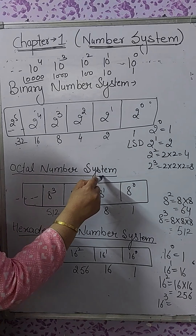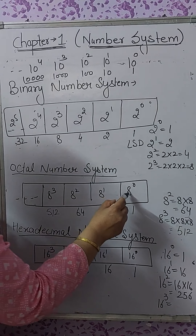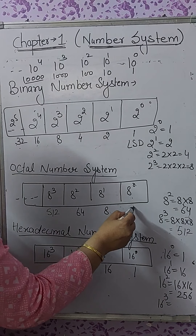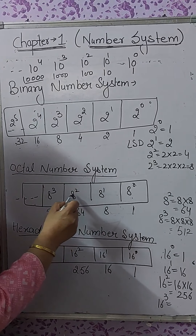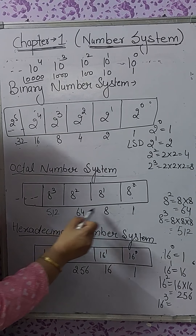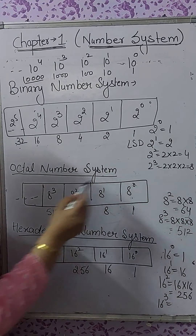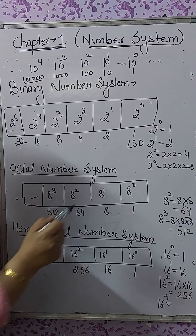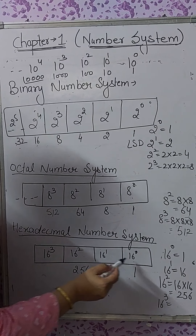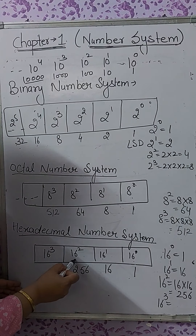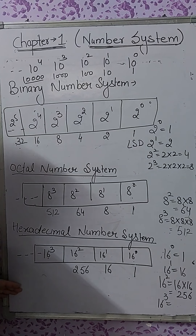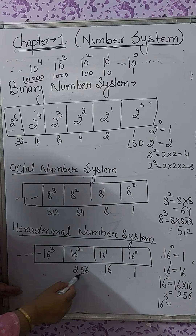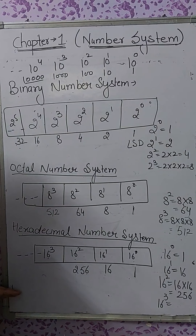Similarly, in the octal number system, the positional values depend on its base. The least significant digit's place value is 8 raised to the power 0, which is 1 — so 1's place, then 8's place, then 8 raised to the power 2 is 64, then 8 raised to the power 3 is 512, and so on. For hexadecimal, with base 16, the place values are 16 raised to the power 0, then 16 raised to the power 1 which is 16, then 16 raised to the power 2 which is 256, and so on.